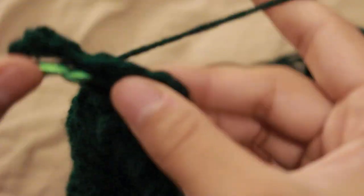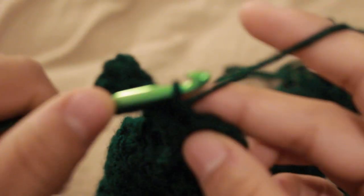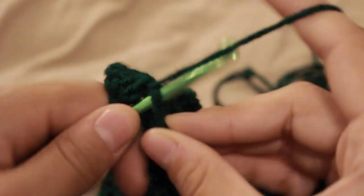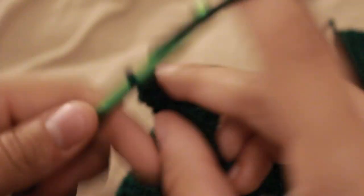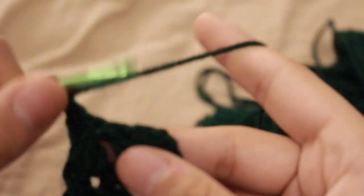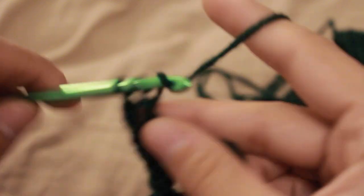Into the second row, you're going to do the same process in alternating between front post and back post double crochets. For the next few rows, you will continue to do the same thing in doing five double crochets across and then in the next row, chaining two and then doing four or two front post and two back post double crochets.